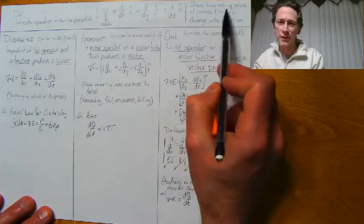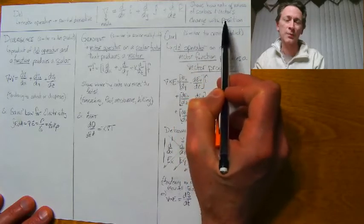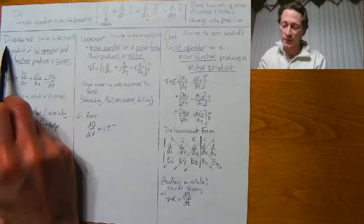What it does is show how the rate of values of a vector or scalar change with position. Three things can happen.